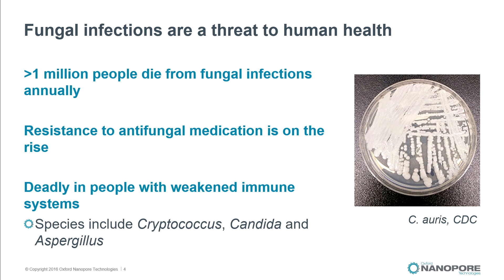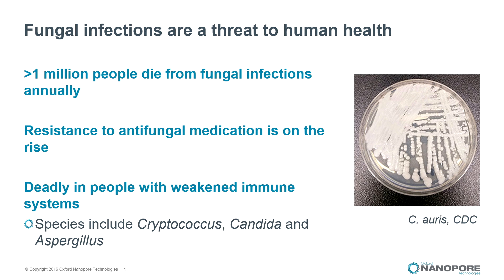This is what Candida auris looks like — a photo from the CDC. It produces just sort of white, opaque colonies, very indistinguishable from other fungal yeast species such as Cryptococcus. In terms of just looking at it on a plate, we can't really tell what species it is, so we need to go into more specialized molecular methods for speciation.